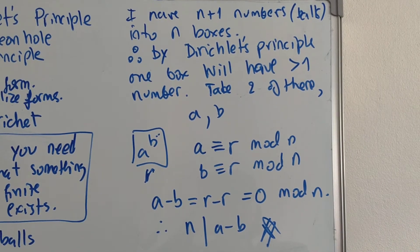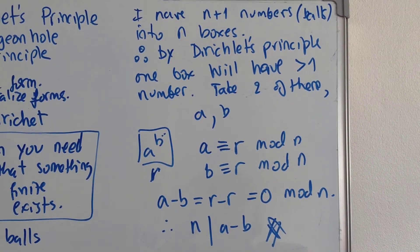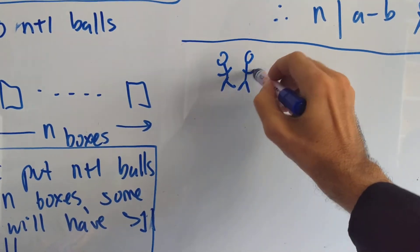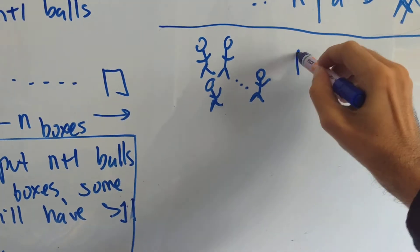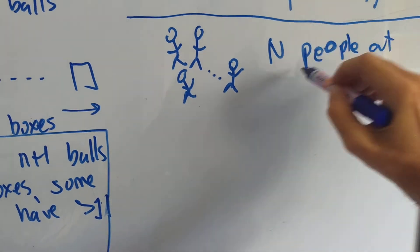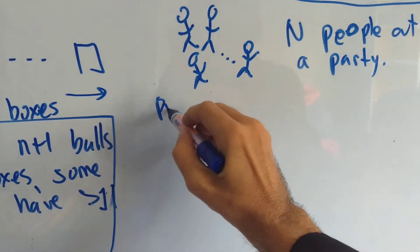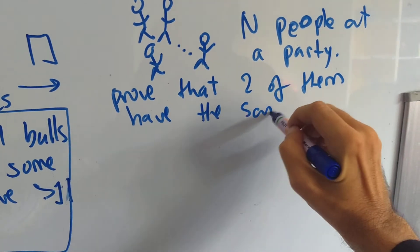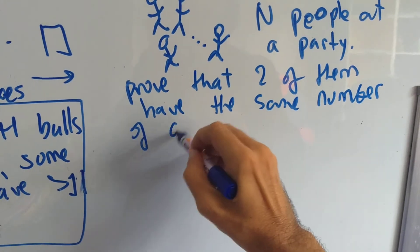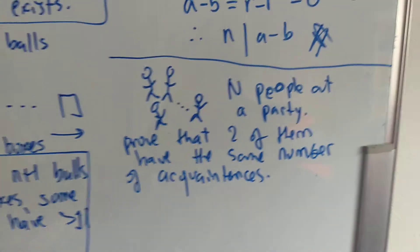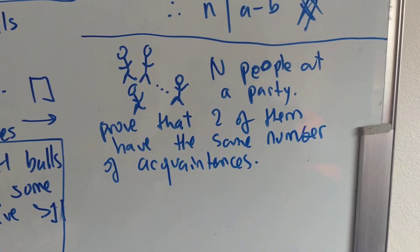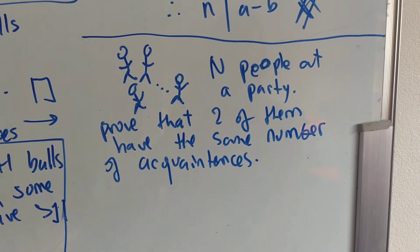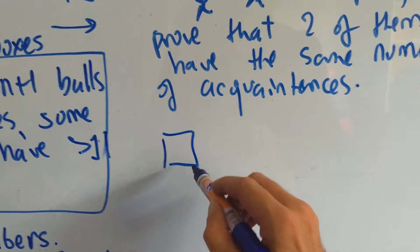That's why it requires a lot of study and practice. The next one is a classic problem: I have n people at a party, and I want to prove that two of them have the same number of acquaintances. We have no idea how many people there are or the relationships between them, and yet we're supposed to prove that two of them have the same number of acquaintances. We can do that by Dirichlet's principle.